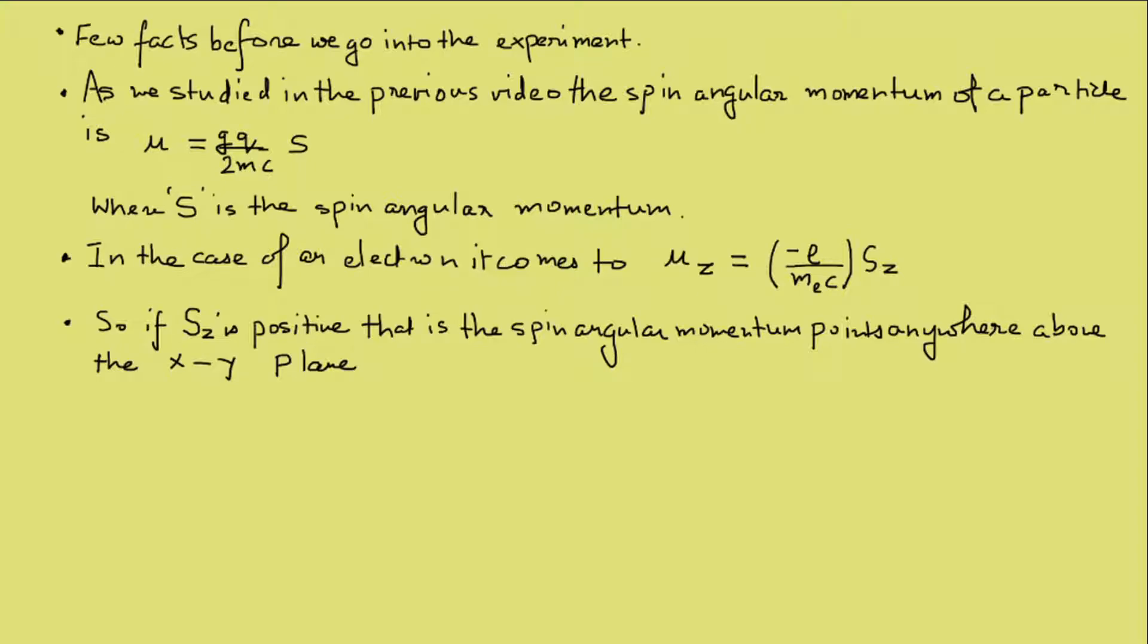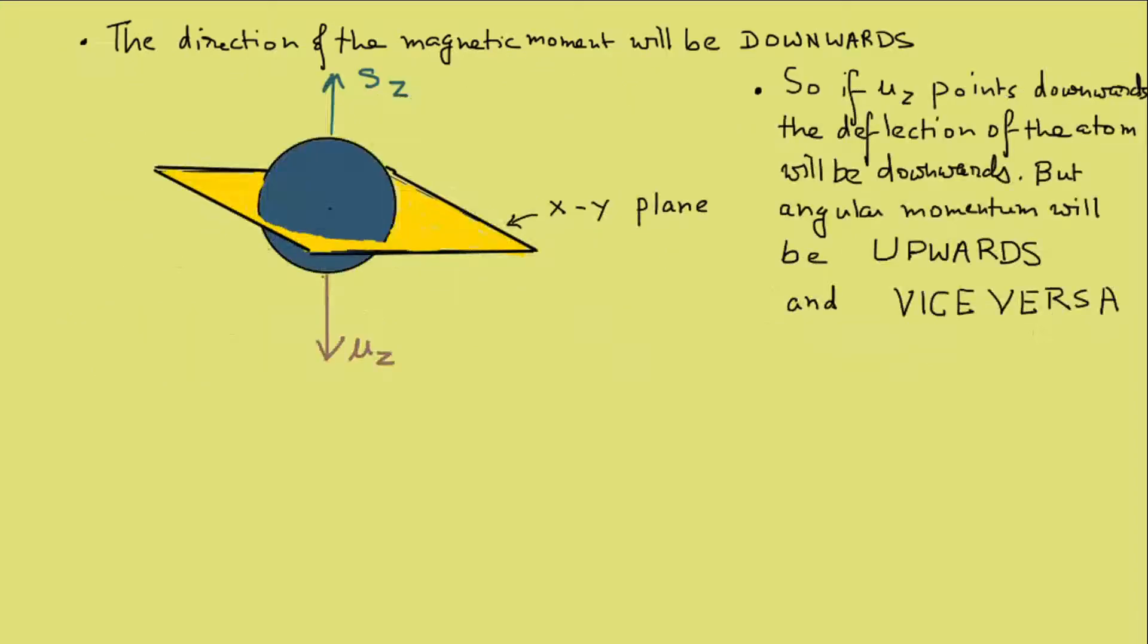The spin of the angular momentum will determine the direction of the magnetic dipole. Thus, inside an inhomogeneous magnetic field, the atom will deflect towards the direction of mu z, but the downward deflected atoms will have their angular momentum upwards. Similarly, the upwards deflected atoms will have their angular momentum downwards, as we discussed a while ago.